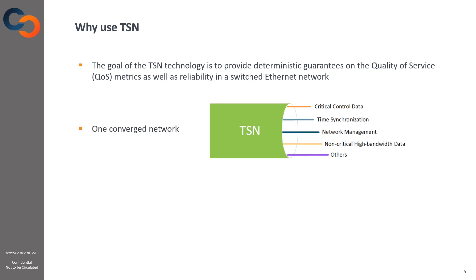There can be many different requirements and reasons to use TSN. In general, the overall goal with TSN is to provide deterministic guarantees for quality of service as well as reliability in a switched Ethernet network. By adding TSN to an infrastructure network, it is possible to have one converged network that can cover both OT and IT networks. It is for example possible to guarantee latencies from a critical sensor or certain bandwidth from a video source on a factory floor, while having regular IT traffic running on the same network.